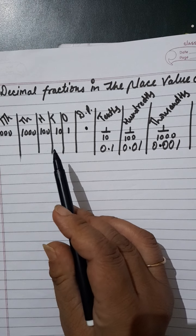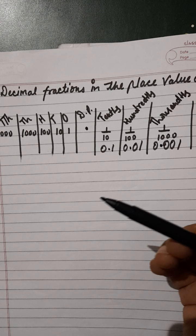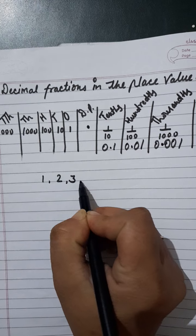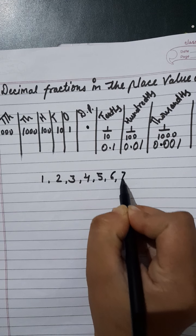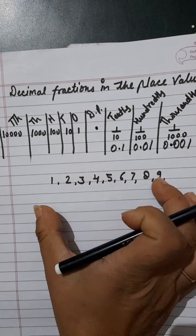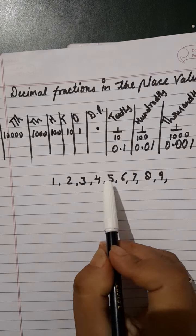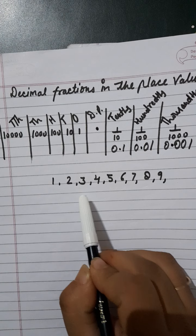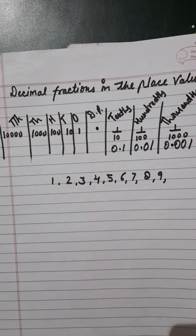Before the decimal, the place value stays as it is — as you have already learnt. Like ones means one only. From one to nine, the digits that come are: one, two, three, four, five, six, seven, eight, nine. These are single digit numbers. So in the ones place, you can write one through nine. You cannot write ten, because it has two digits — it is a two-digit number, so it goes in the tens place.